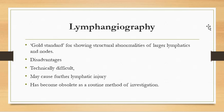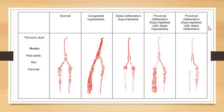The gold standard investigation for showing structural abnormalities of larger lymphatics and lymph nodes is lymphangiography. It has a disadvantage of being technically difficult and may cause further lymphatic injury due to contrast reaction. It is performed by injecting contrast between the first web space of the affected foot, and fluoroscopic-guided images are taken. It is now considered an obsolete method.